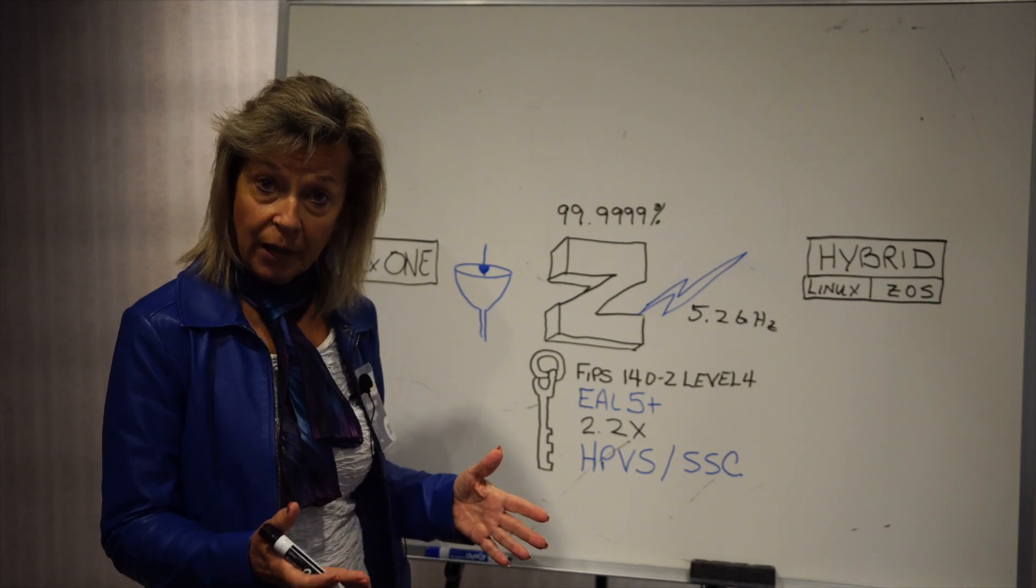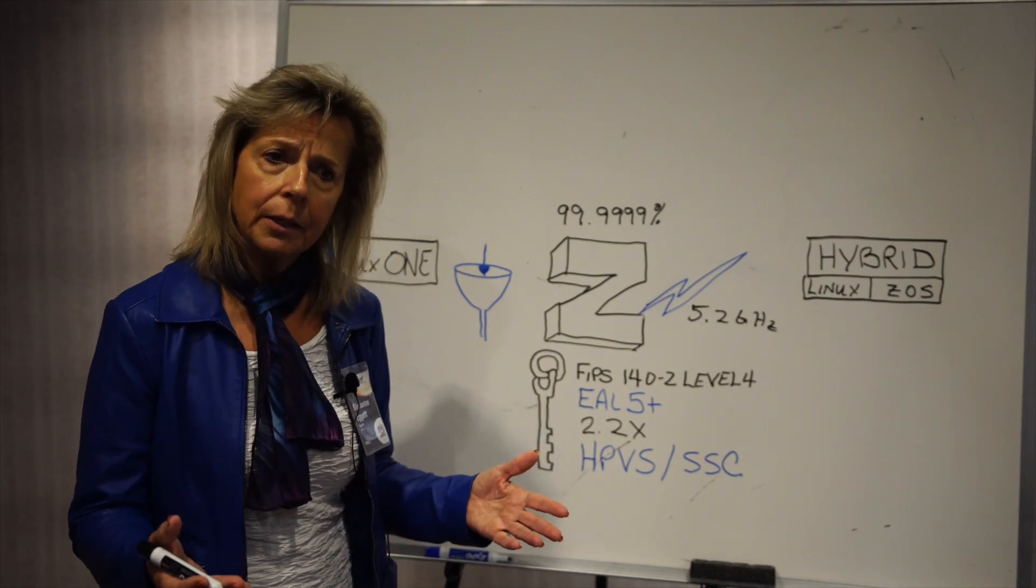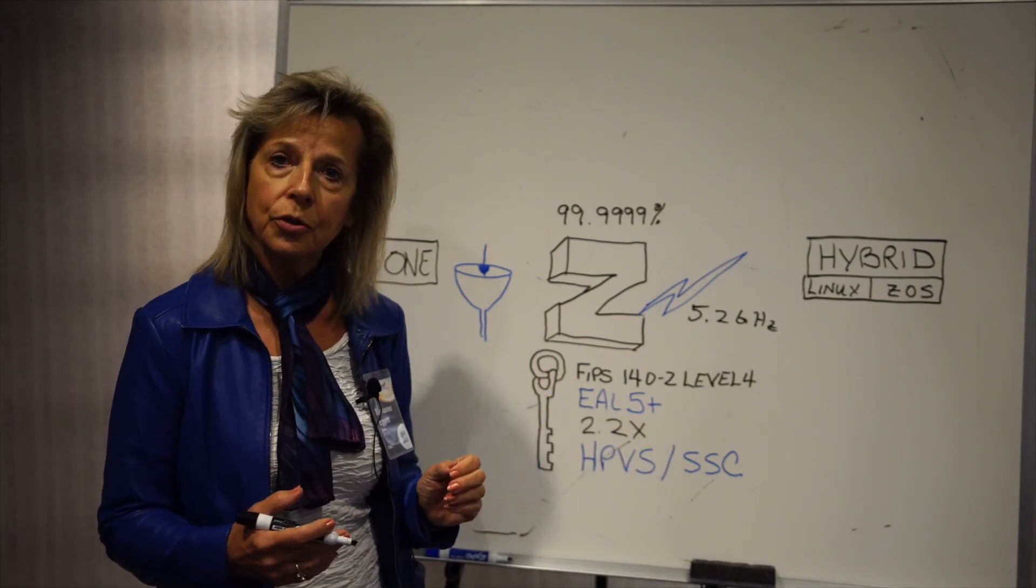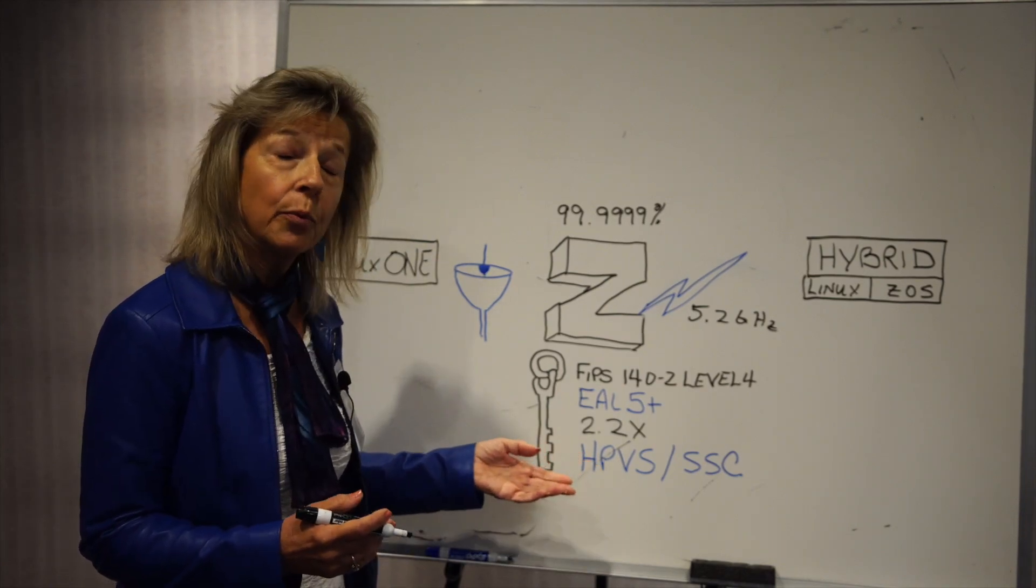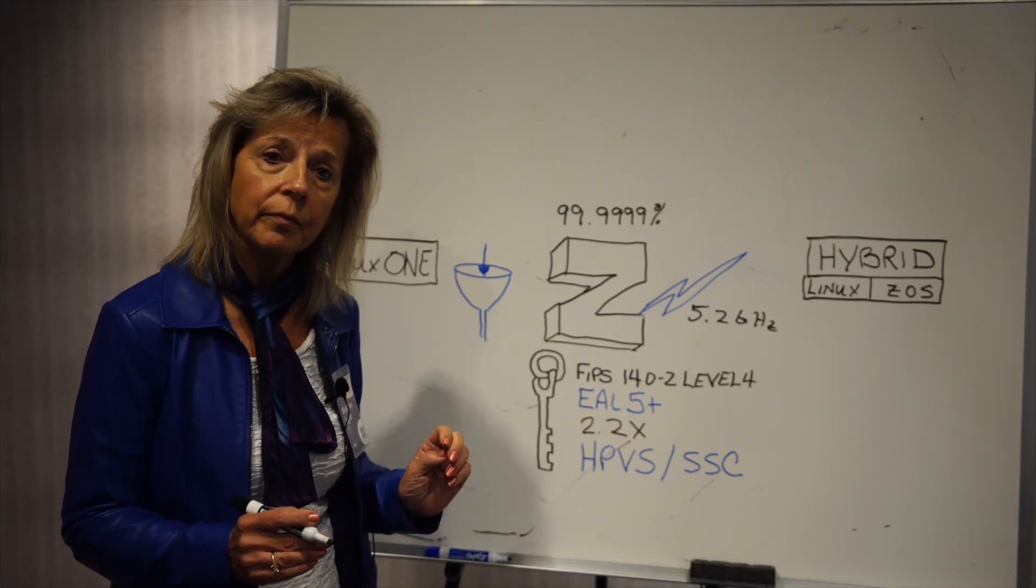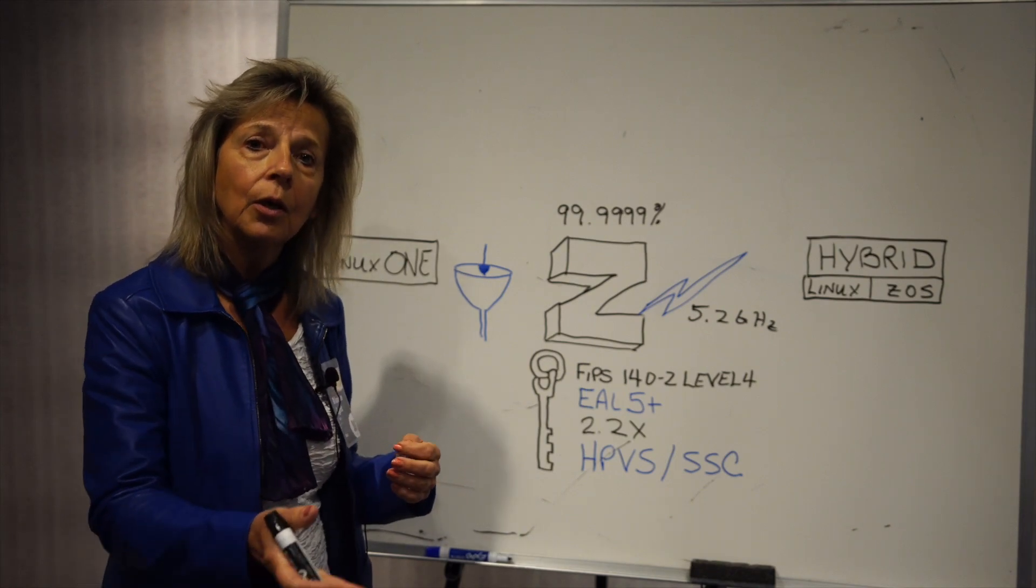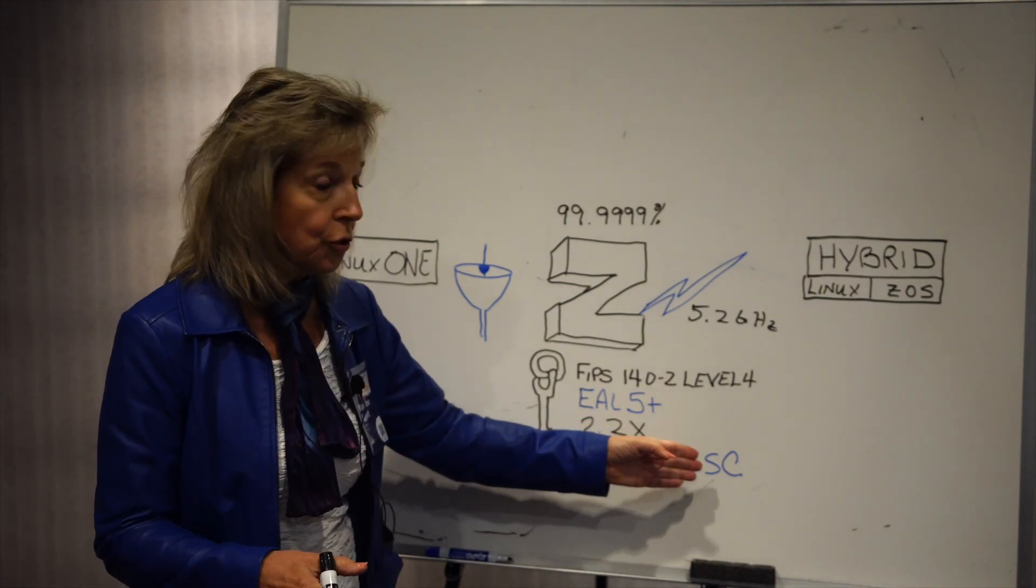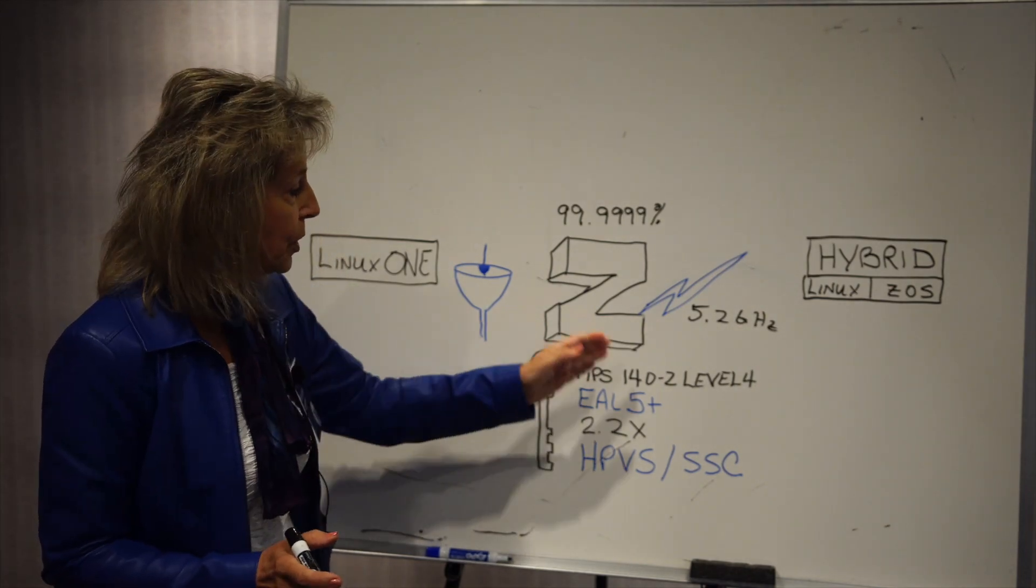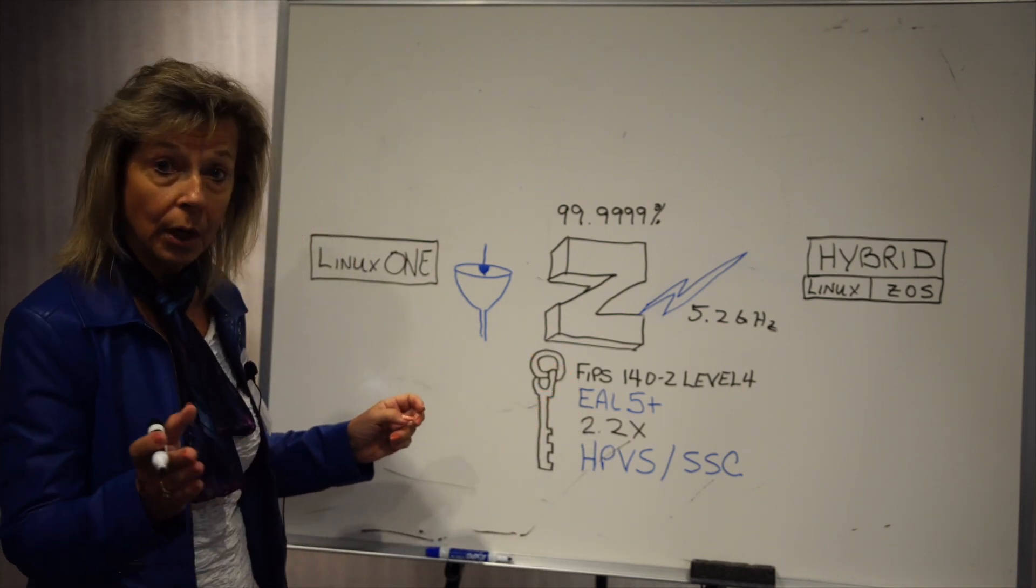But we recognize that you as a customer might want to have this level of security in the secure service container and IBM has implemented software products called hyper protect and one of them is hyper protect virtual servers. What that offers you is the easy way of deploying your containers in a secure service container and achieving this level 4 tamper proof keys. So this is all built into the IBM Z. So security is a big element here for an IBM Z server.